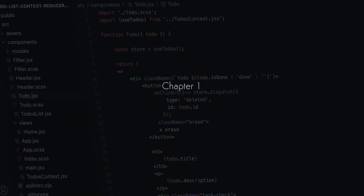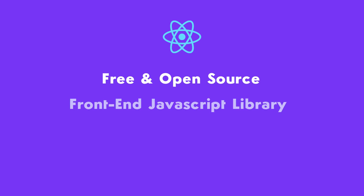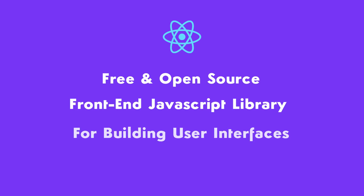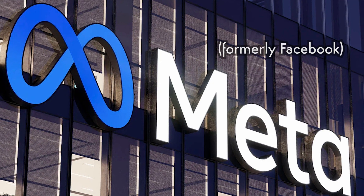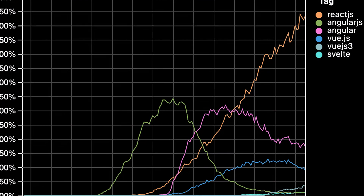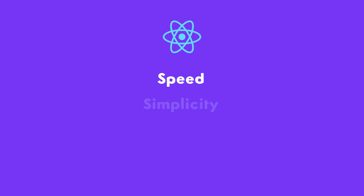Chapter 1: What is React? React is a free and open source front-end JavaScript library for building user interfaces. React has been created by Meta employees and is now the most popular framework for front-end web development. It is known for its speed, simplicity and reusability.